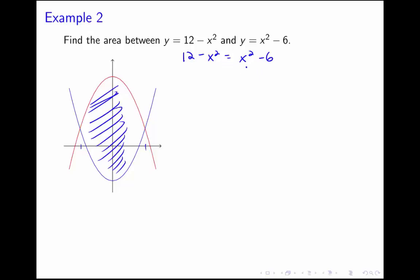We'll set 12 minus x squared equal to x squared minus 6. That means 18 equals 2x squared, or x squared equals 9. So we'll have x is plus or minus 3 as our two different bounds here.